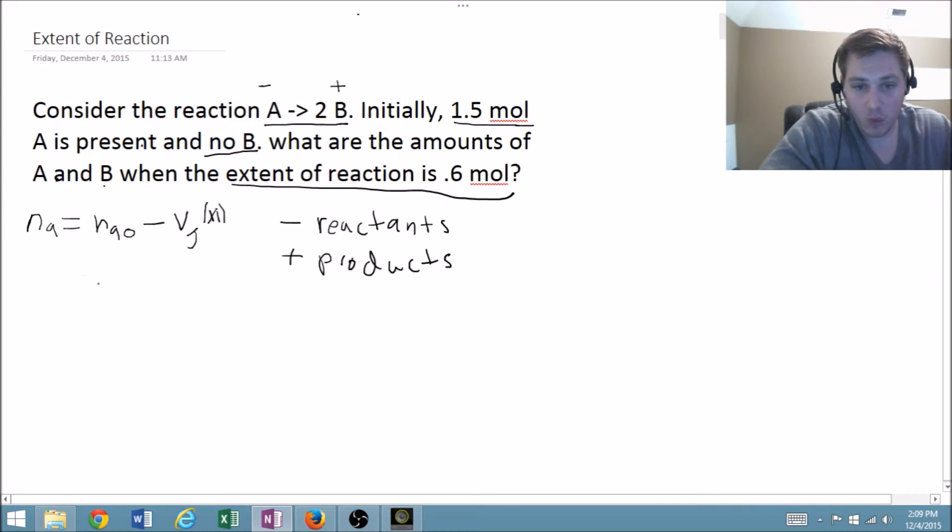Given that we have 1.5 moles initially, we can write 1.5. Our coefficient for A is actually just 1. So we have 1, and then we have 0.6. Doing a little arithmetic, we know that at 0.6 moles of extent of reaction, we have 0.9 moles of A.